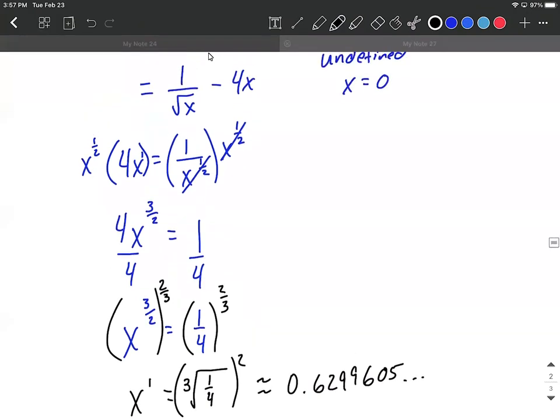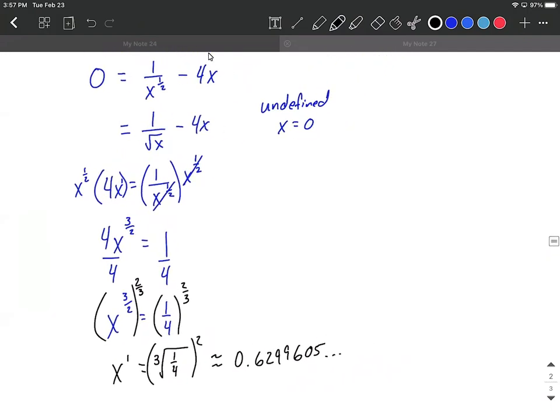So we did have two values that were critical numbers, or critical values. They were either when the denominator would equal zero, where the first derivative would be undefined, or when the first derivative equals zero and we do some solving down. I hope this helps. Good luck to you with finding critical values or critical numbers.